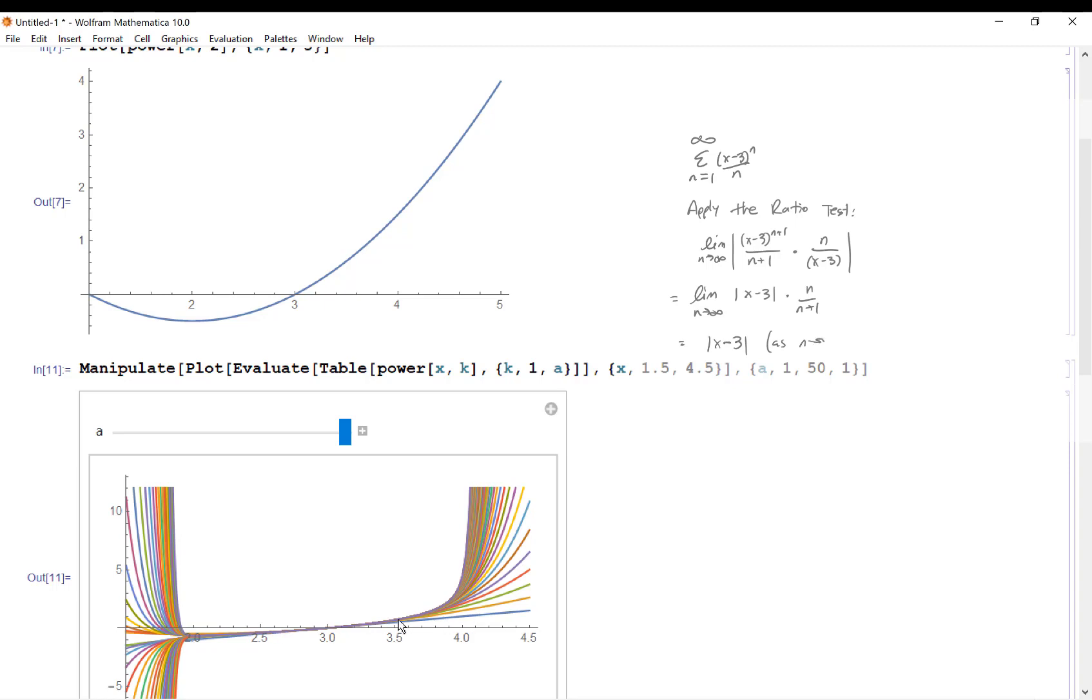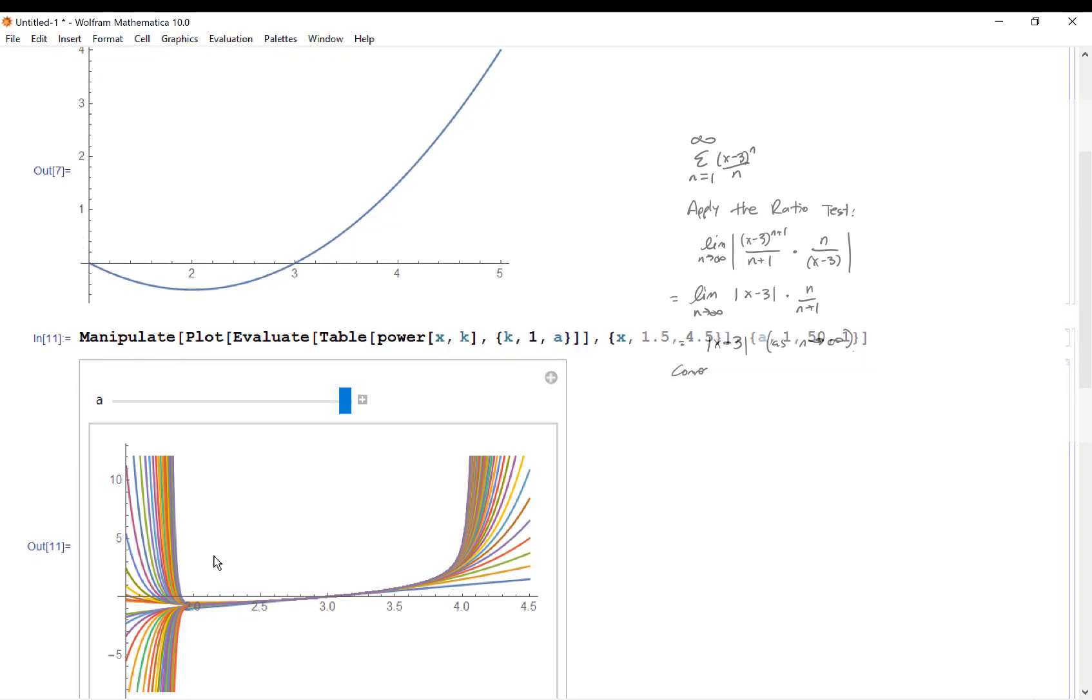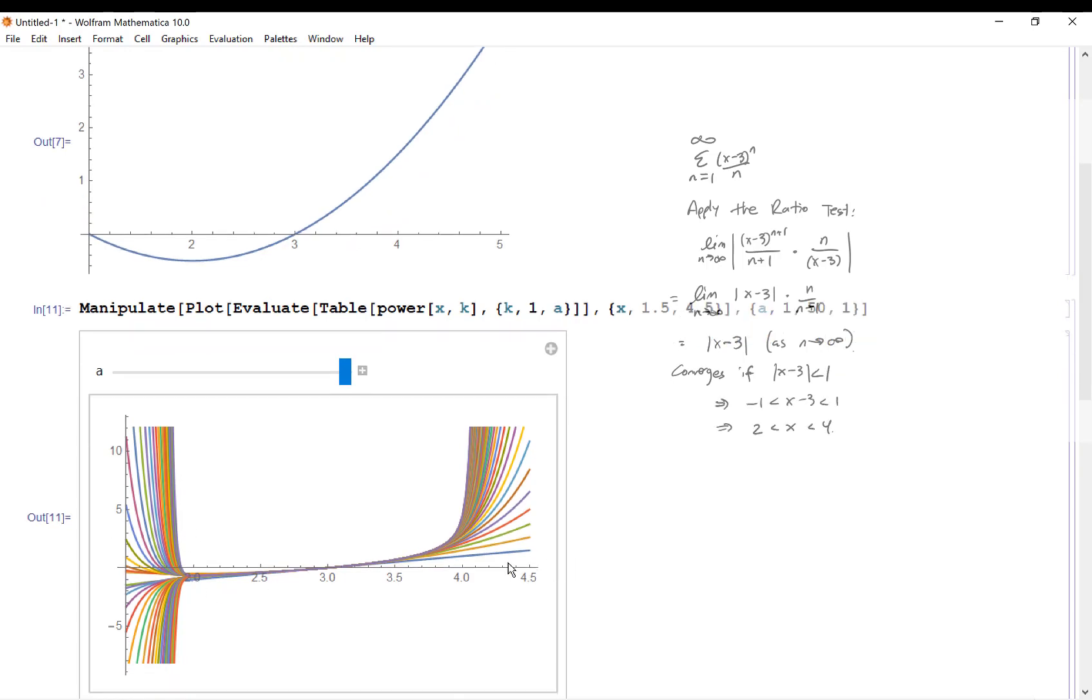We'd go 3 plus 1 up to 4. And then we have to test exactly at 2 and 4 to see if it would work. In particular, if you plug in x equals 2 into this, you get the alternating harmonic series, which converges. If I plug in 4 and let n go to infinity, I get the harmonic series, which diverges.